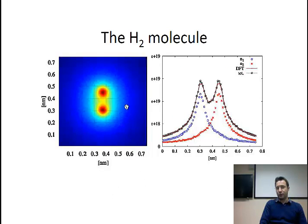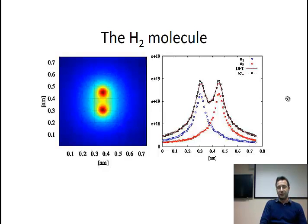Finally, we repeated the experiment with two hydrogen atoms very close together. Again taking a one-dimensional cut, we observe the formation of a chemical bond — it is very clear. This is exactly what you expect from a reliable DFT method. So this Wigner-Monte Carlo method in DFT really works, it is applicable, and the interesting thing is that it is very parallelizable. If you have a cluster and want to simulate large molecules, this is the method you should use.